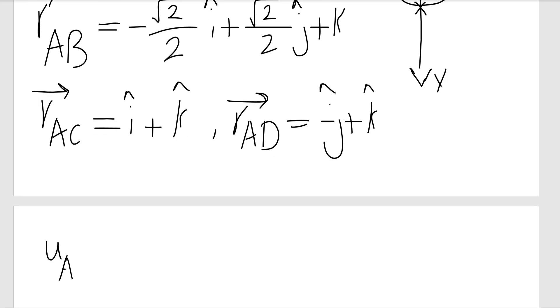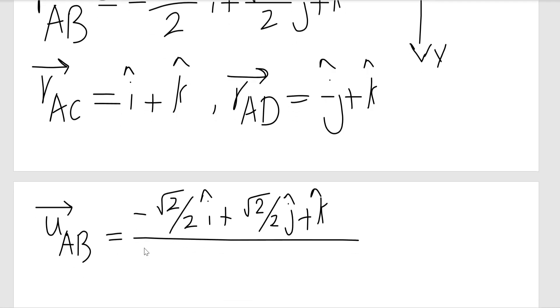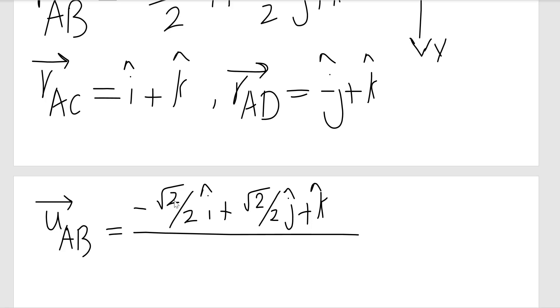If I have rAB, then uAB would be the position vector divided by its magnitude. Let me write the position vector here first with the magnitude. Here, √2/2 squared would be 2/4, which is 1/2. Here again 1/2, plus 1 equals 2, so the magnitude is √2. Therefore I have uAB = -0.5 i + 0.5 j + (√2/2) k.